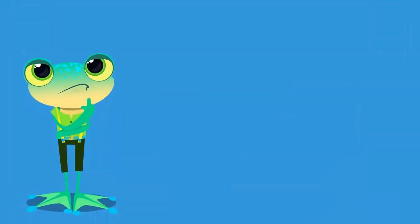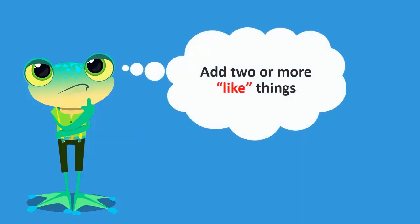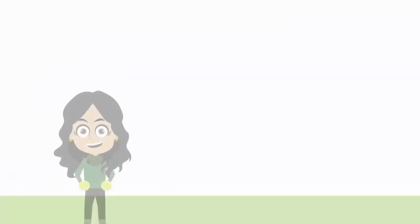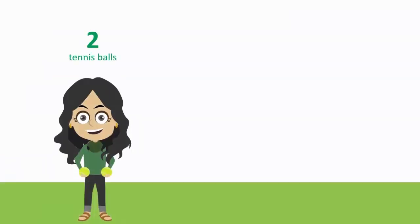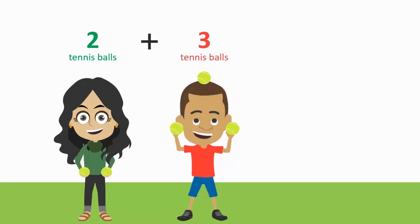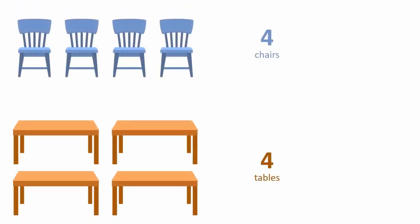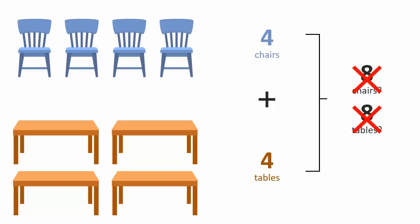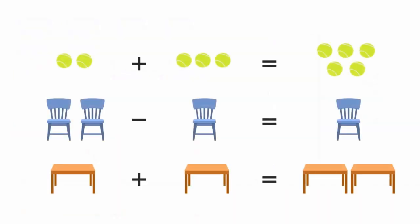How is all of this useful in our daily lives? Think of an example where you add 2 or more like things. If Sara has 2 tennis balls and Asif has 3 tennis balls, there will be a total of 5 tennis balls. If we have 4 chairs and 4 tables, we cannot say we have 8 chairs or 8 tables in total, because tables and chairs are different objects. From this, we can see that we can only add or subtract like objects. In algebra, we do the same — we can only add or subtract like terms.